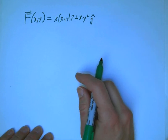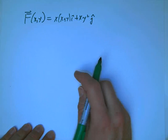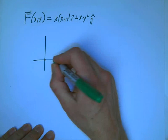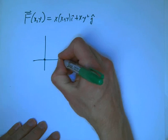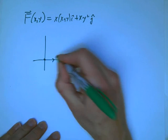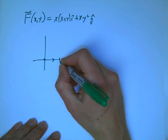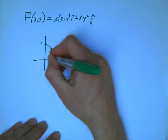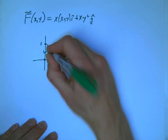And it's along a closed curve moving from the origin along the x-axis to (1,0), and then along the line segment to (0,1), and then back to the origin. Nice little triangle.